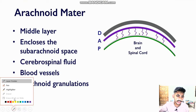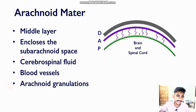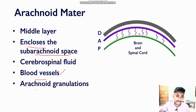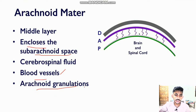Arachnoid mater encloses the subarachnoid space. It provides a pathway and support for the incoming arteries and outgoing veins. Furthermore, arachnoid mater has got some specializations which are called arachnoid granulations, which we will talk about later on in this session.